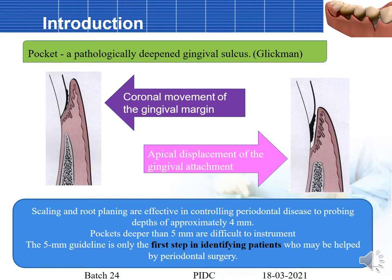Surgery is being done for cases with pockets. What is a pocket? A pocket is a pathologically deep gingival sulcus. This pathological deepening of the gingival sulcus could be because of the coronal movement of the gingival margin or because of the apical displacement of the gingival attachment. How do we know when to go for surgical treatment for a patient?